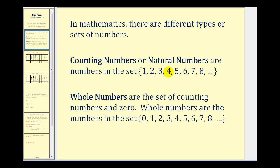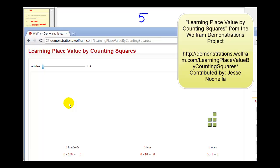Since our number system is base ten, as we consider larger and larger whole numbers, we have to introduce place value to distinguish between different quantities. For example, if we were counting these items where each square was one, we'd have a total of five, or five in the ones place value, which gives us the number five.